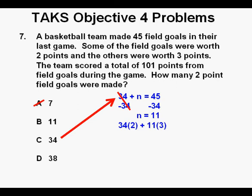Next we take 34 times 2 plus 11 times 3. And that becomes 68 plus 33 equals 101. And that gives us C as our correct answer since that's what we were looking for, 101 points.